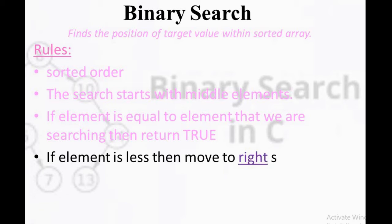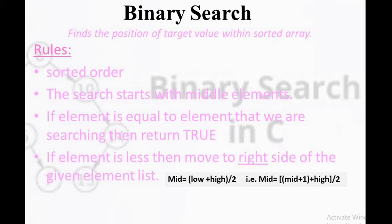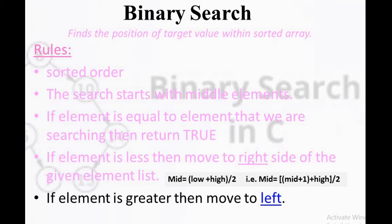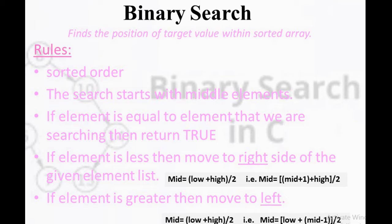The fourth, if the element is less then move to the right side of the list. The formula is mid equal to low plus high divided by 2. If the element is greater then move to the left side of the element list. We repeat this step until we find the searched element.